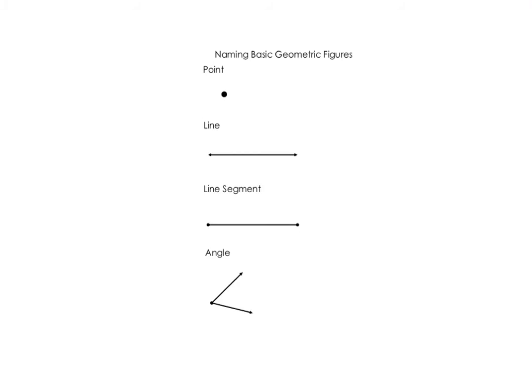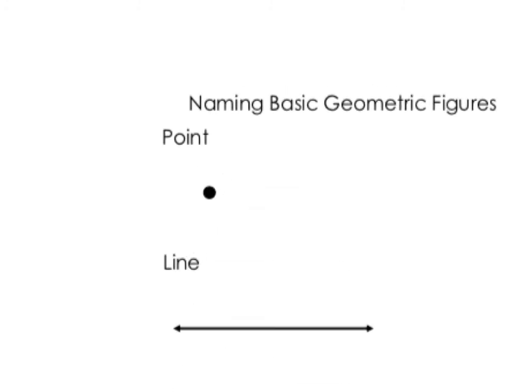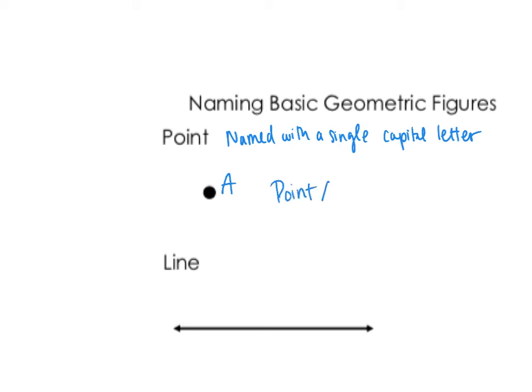In this lesson we're going to go over some basic circle vocabulary, and we're first going to start off by going over how to name basic geometric figures. The way we name a point is it's named with a single capital letter. So if this is our point and there's a letter A next to it, we would call it point A.